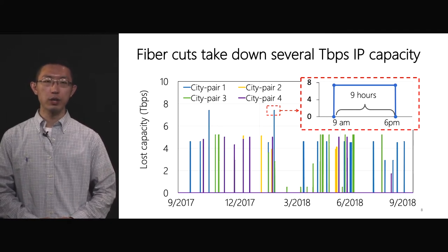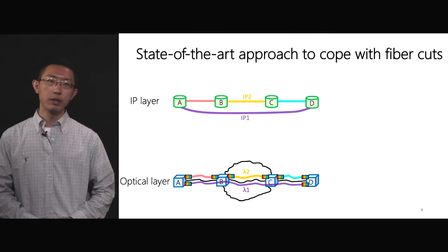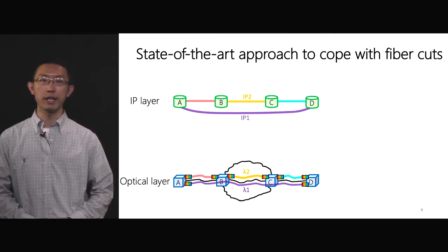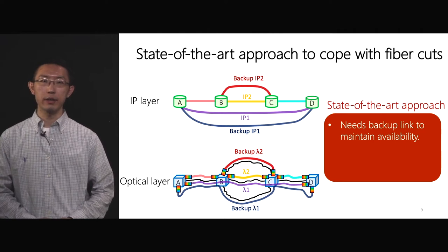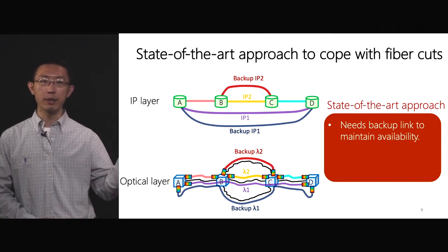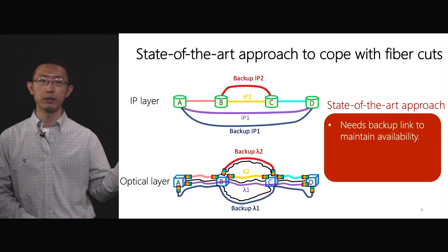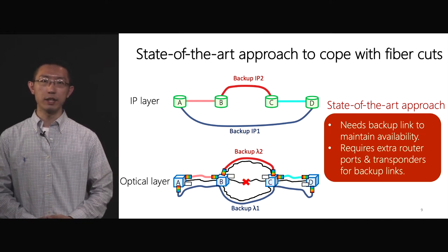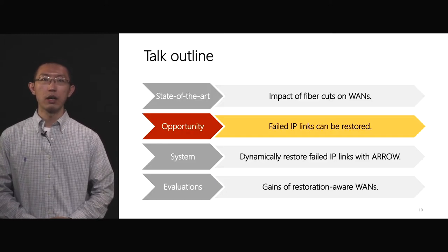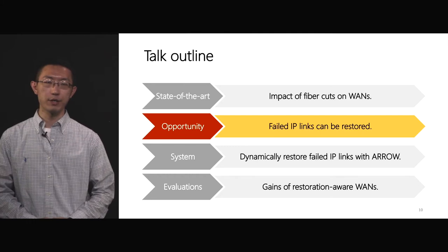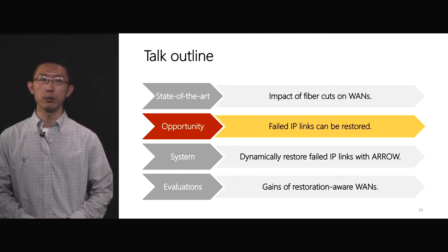The question is, how do we solve this problem? The state-of-the-art approach to cope with fiber cuts requires adding backup links. On this topology, to handle fiber cuts and avoid traffic loss, the state-of-the-art approach adds redundant wavelengths on the optical layer to create backup IP links 1 and backup IP links 2. In this case, when fiber BC is cut, the network is still available. However, this approach requires redundant network hardware like router ports and transponders. We now know that fiber cuts have a huge impact on WANs, and the state-of-the-art approach is very inefficient as it requires extra router ports and transponders to build backup IP links.